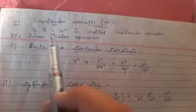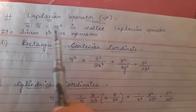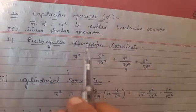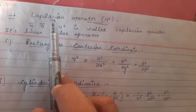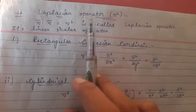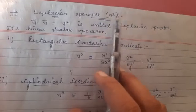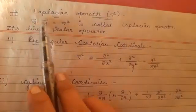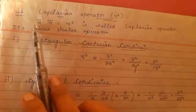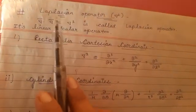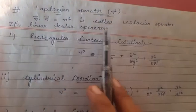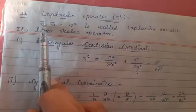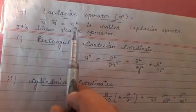Good morning students. Next we have a topic: the Laplacian operator, and we will derive its expression in 3D coordinate systems. First of all, we're going to describe what the Laplacian operator is. As we know, del dot del — divergence multiplied by divergence — del square, is known as the Laplacian operator.